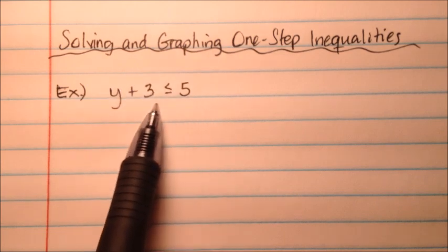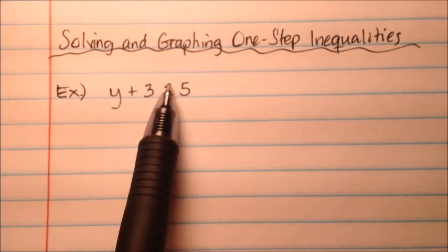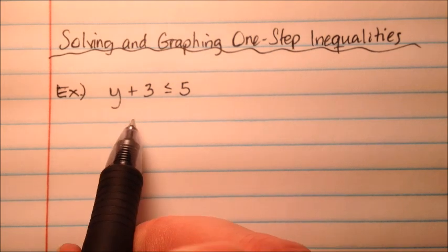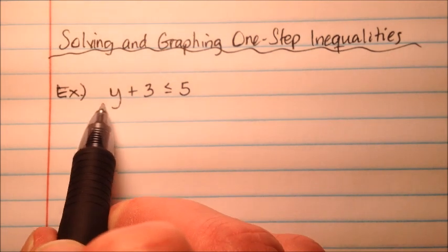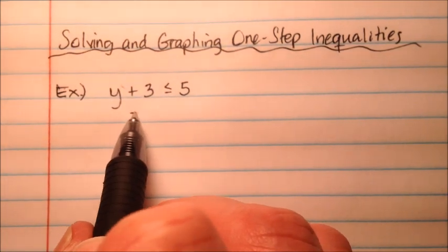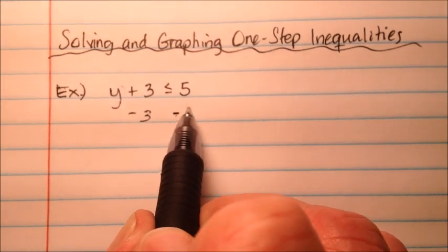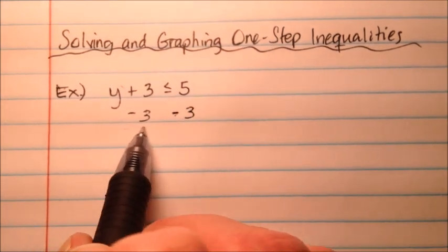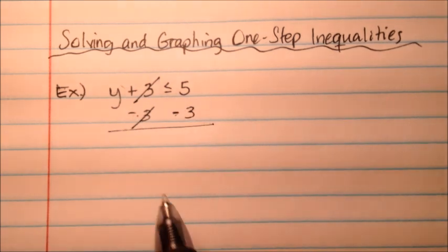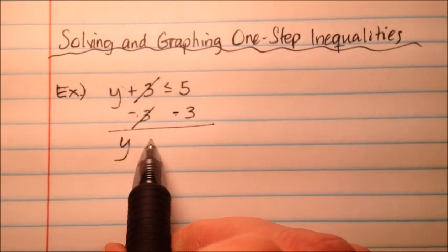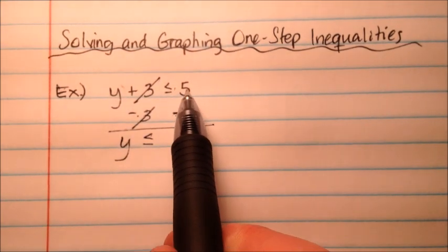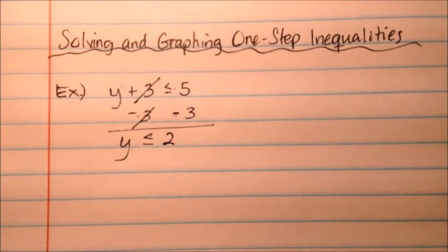So here we have y plus 3 is less than or equal to 5. Just like an equation, I want to isolate my variable, get it all by itself on one side. I can do that by subtracting 3 from both sides. The plus 3 and the minus 3 cancel out, which was by design. So y is now less than or equal to 2, because 5 minus 3 is 2.